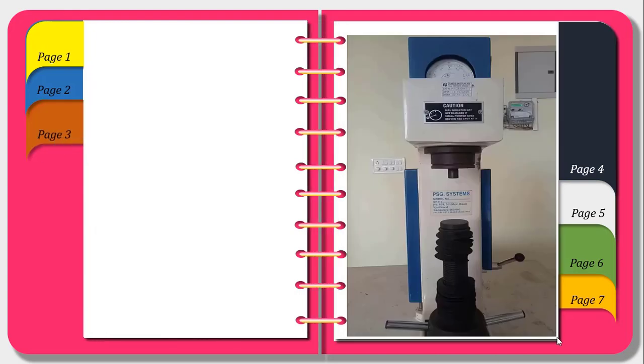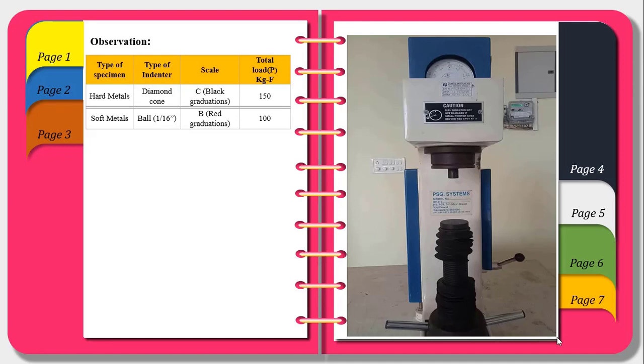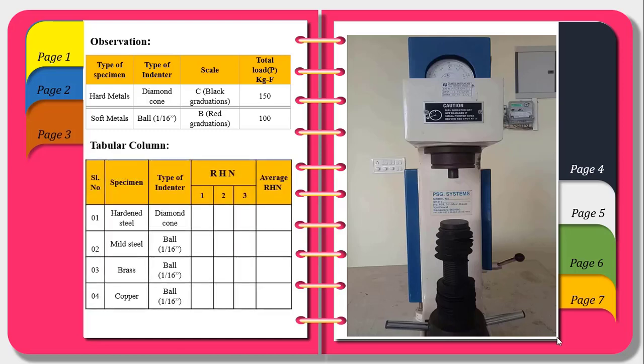Now moving on to the observation. The type of specimens used are hard metals or soft metals. The type of indenter, scale and the load all three depend upon the specimen which is going to be selected. The tabular column includes the specimens, the type of indenter and the Rockwell Hardness number and the average Rockwell Hardness number.